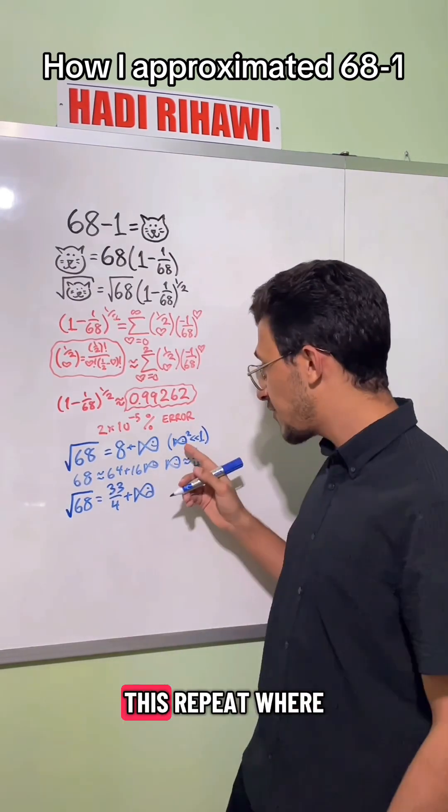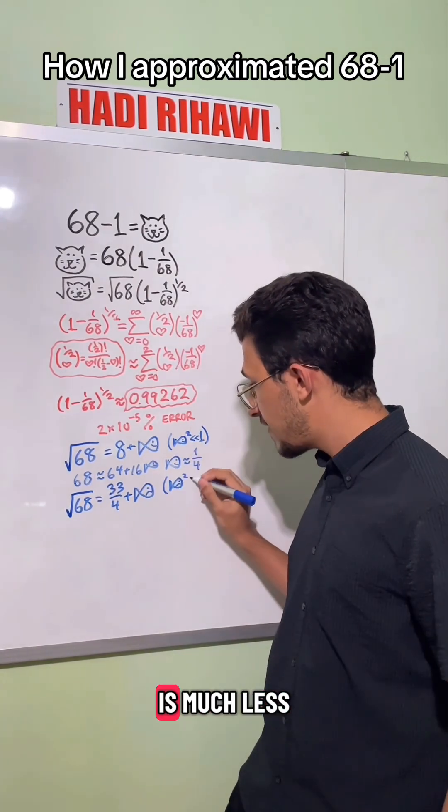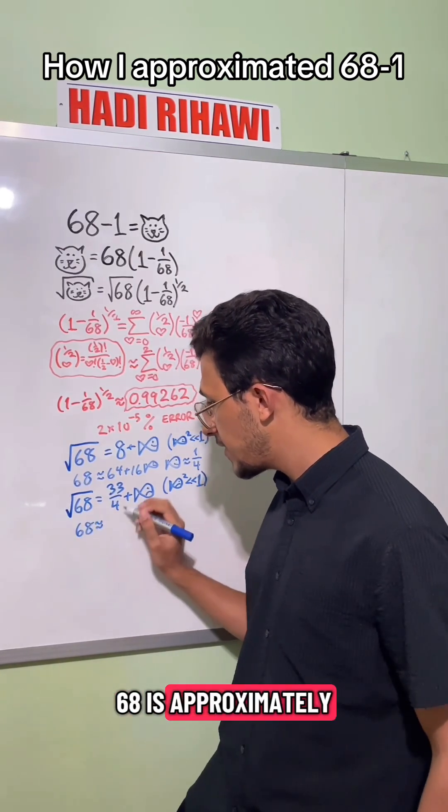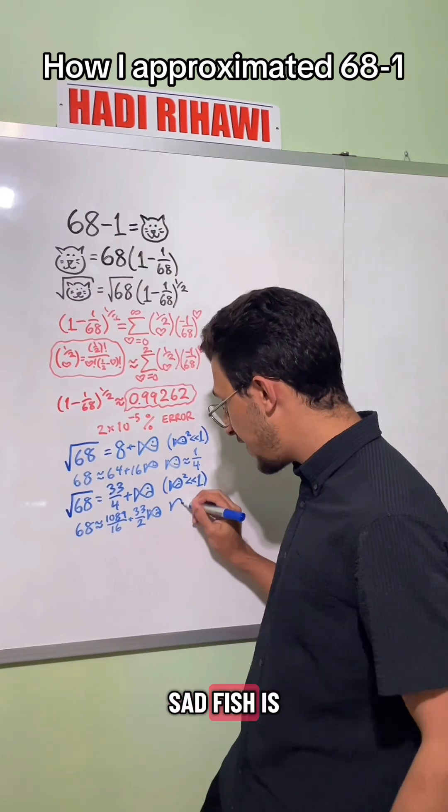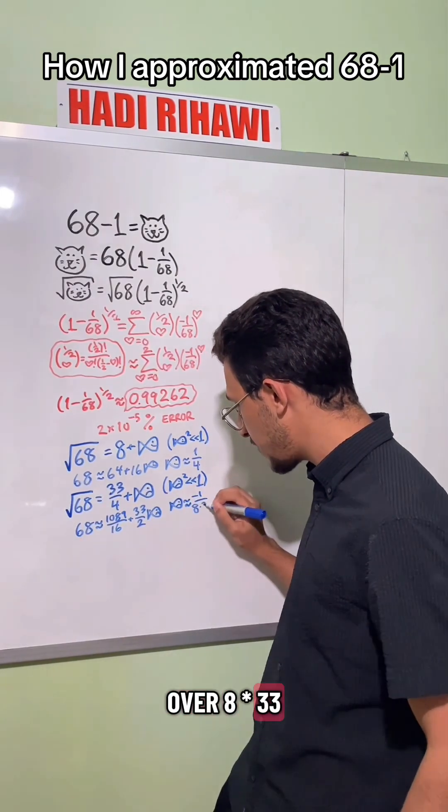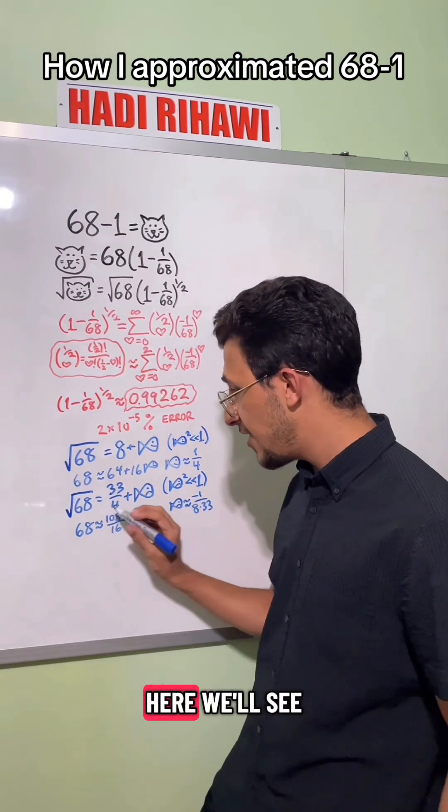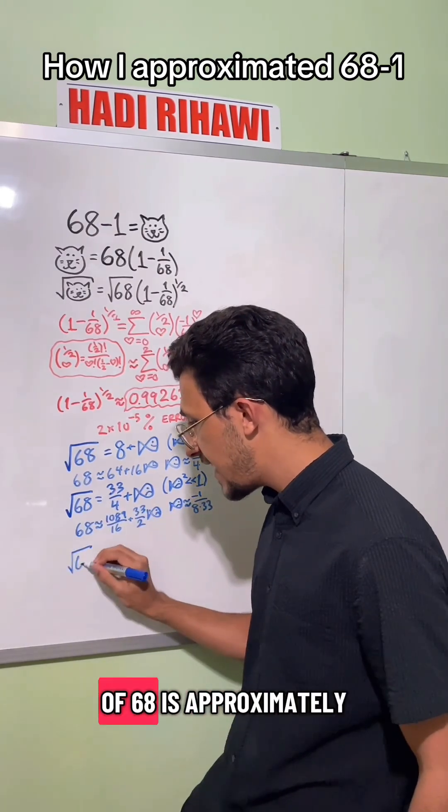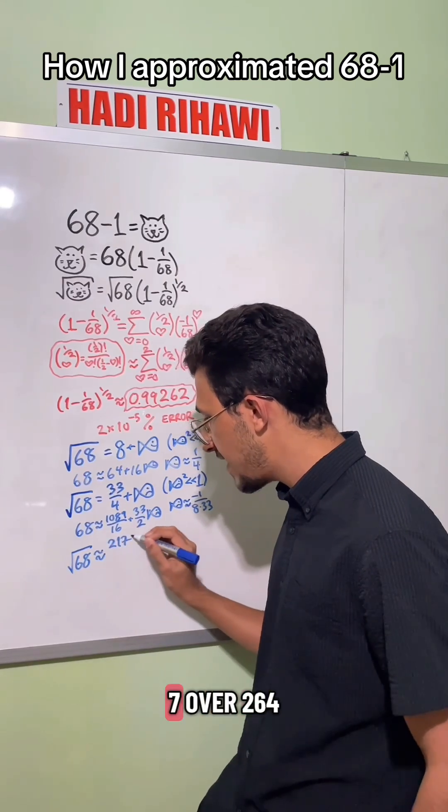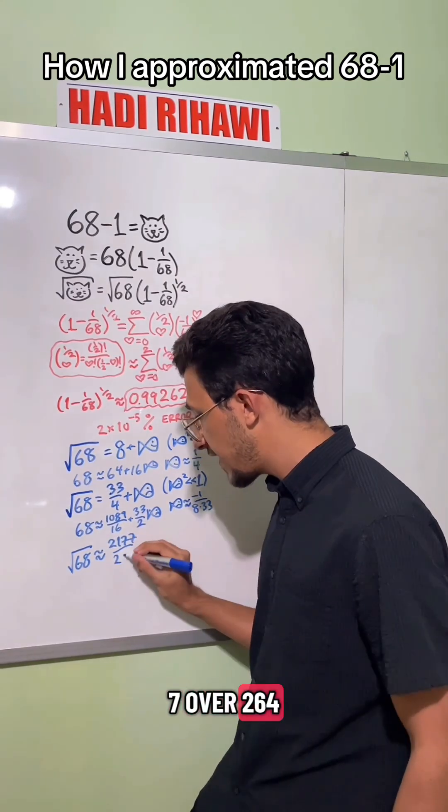Again, we'll have this repeat where sad fish squared is much less than 1, and so when we square both sides, we'll get that 68 is approximately, in this case, we'll get that sad fish is approximately negative 1 over 8 times 33. Adding this here, we'll see that square root of 68 is approximately 2177 over 264.